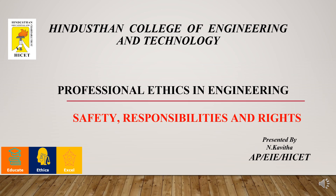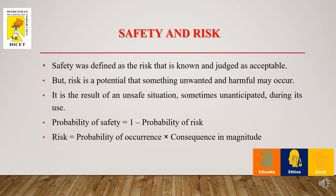All three are the basic parameters for an engineer to be a professionally ethical one. Safety is defined as a risk that is known and judged. A risk is a potential that something unwanted or harmful may occur — it is a result of unsafe situations. If there is a probability of safety, there will also be a probability of risk. Risk is defined as the probability of occurrence and the consequence of its magnitude.